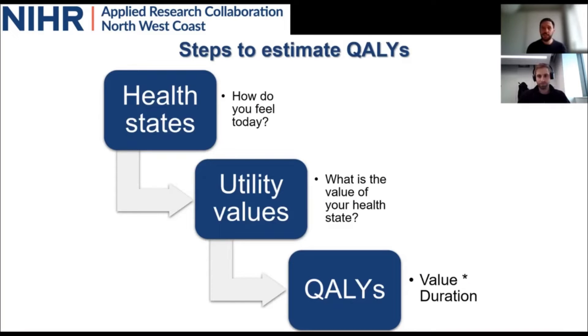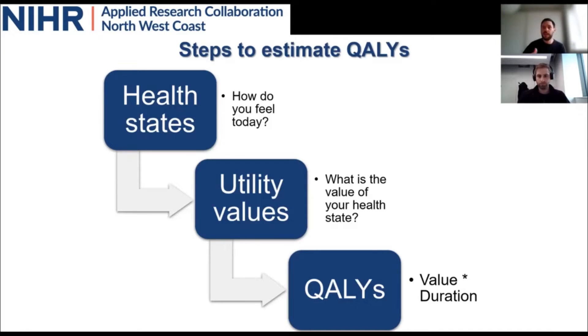Can you give an example using QALYs on how it helps to make a decision? If you have an intervention which yields more QALYs than another, then that intervention might be deemed more effective. In an economic evaluation we also look at cost, so we need to determine cost-effectiveness — what is the cost per additional QALY gained. That's the concept used for determining cost-effectiveness of an intervention: cost per QALY gained.